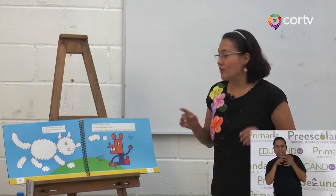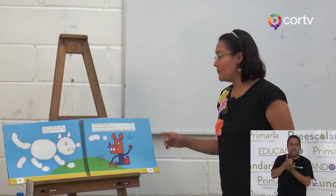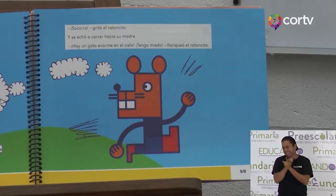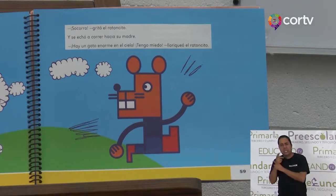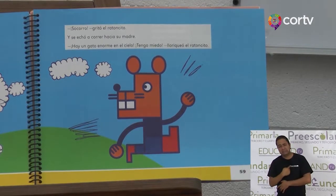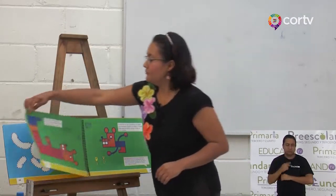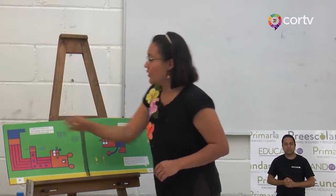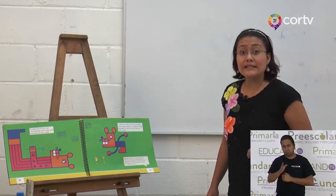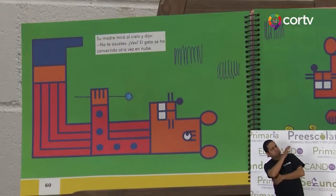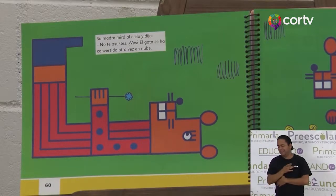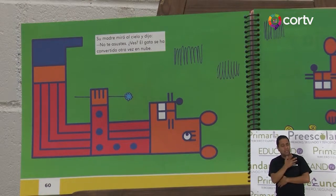¡Socorro! Gritó el ratoncito, y se echó a correr hacia su madre. Hay un gato enorme en el cielo. Tengo miedo. Choriqueó el ratoncito. Su madre miró al cielo y dijo: No te asustes. ¿Ves? El gato se ha convertido otra vez en nube.